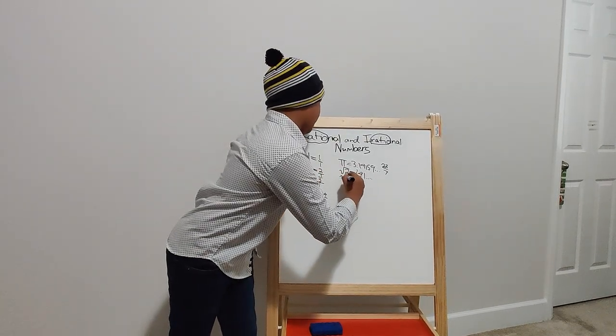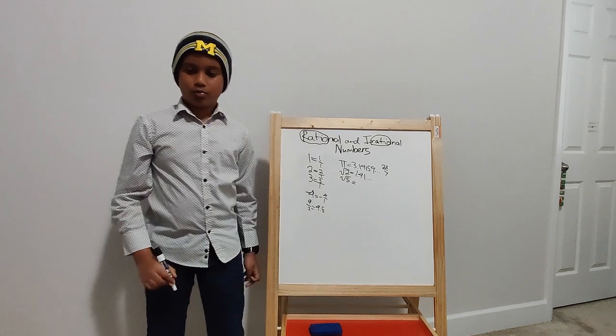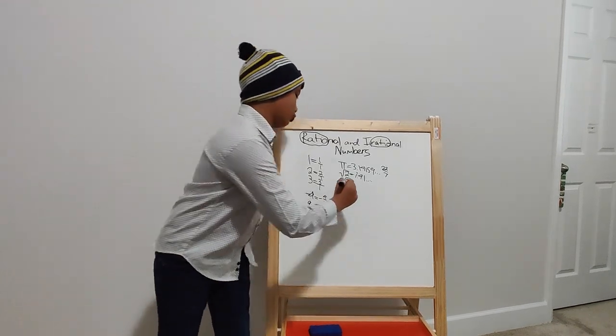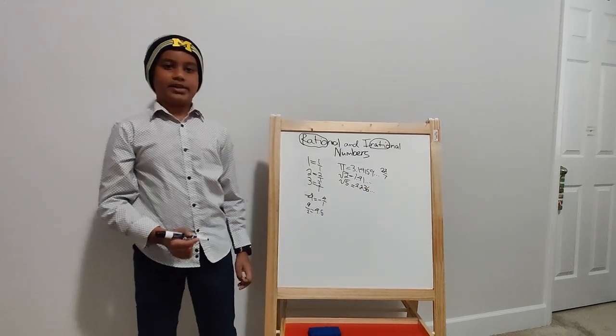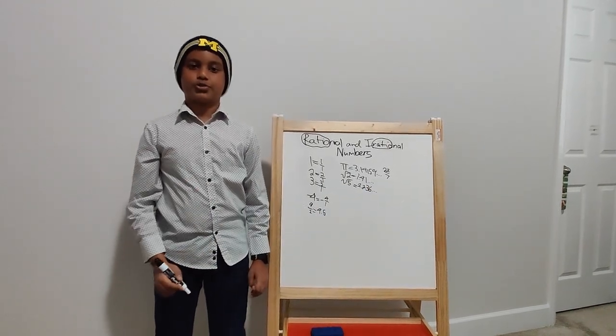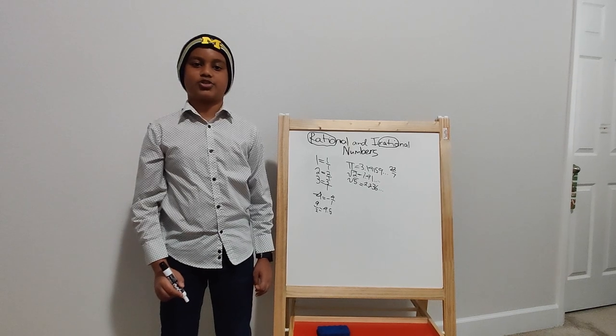Square root of 5 equals 2.236 and so on. And there are multiple square roots that can be irrational numbers.